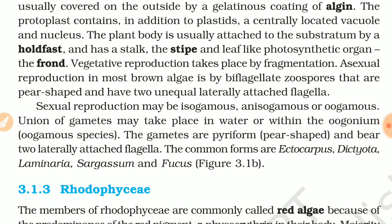In some plants the gametes are of different types — one female gamete and one male gamete. The union of gametes may take place in water, in an aquatic medium, or within the oogonium.